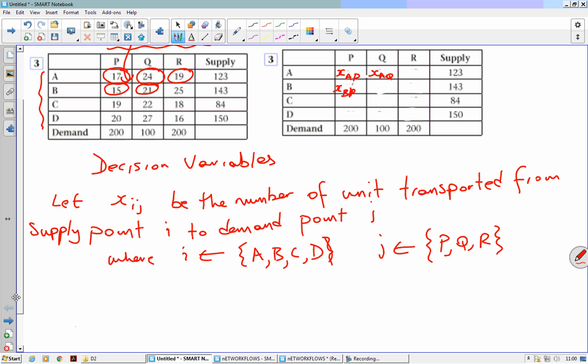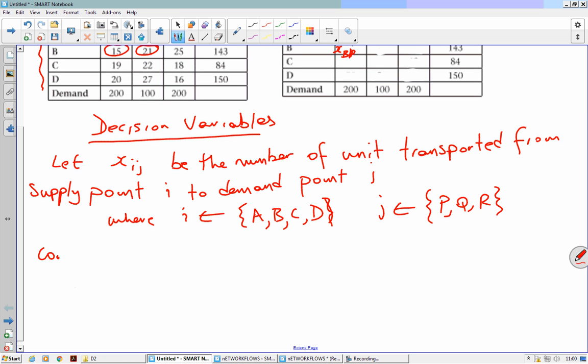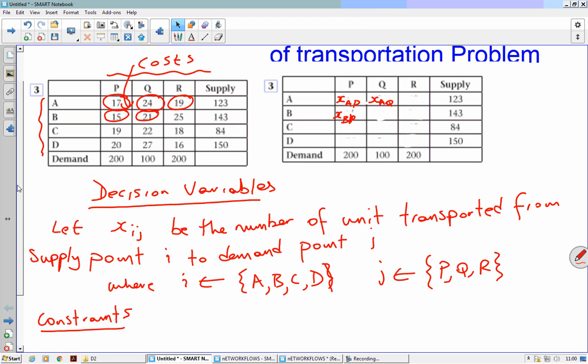Okay, I think that's our decision variables sorted. Okay, we can either go for the objective function now or the constraints. Let's do the constraints first. I prefer to use the sigma notation for the constraints because it means you have to write a little bit less.